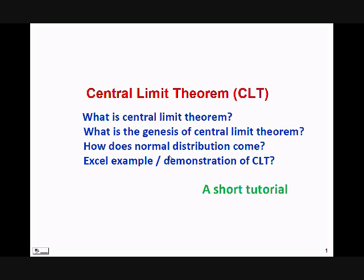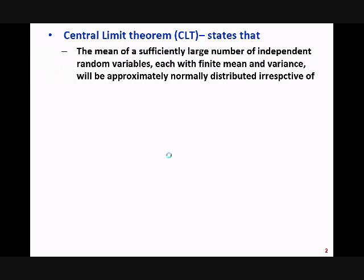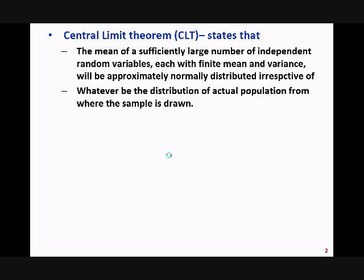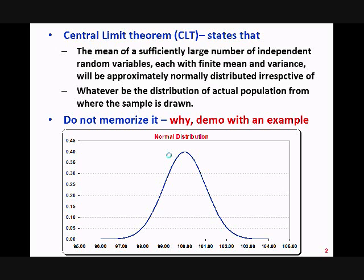Central limit theorem: what is it, what is the genesis of central limit theorem, how does normal distribution come in, and an excellent example of CLT — these are the four things I am going to explain in this tutorial. Central limit theorem states that if you take a sufficiently large number of independent random variables and calculate their mean, it will follow normal distribution irrespective of whatever is the distribution of the underlying population. I'm going to explain why it does what it does and show you a demo in Excel. Also, many students when asked what is normal distribution draw a graph, but when asked what it indicates they get confused — I'm going to explain that too.